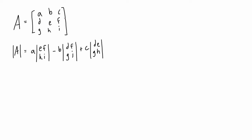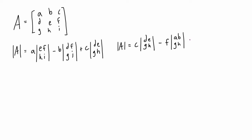This works if you pick any row or any column. For example, using the far-right column: the determinant of A could equal c times the determinant of [d,e,g,h], then minus f times the determinant of [a,b,g,h], then plus i times the determinant of [a,b,d,e]. You can do this for any row or column — as long as you follow the same method, you'll end up with the exact same answer.